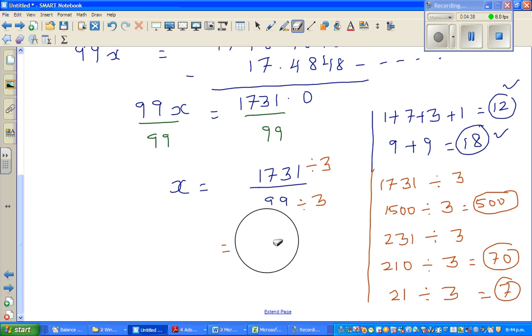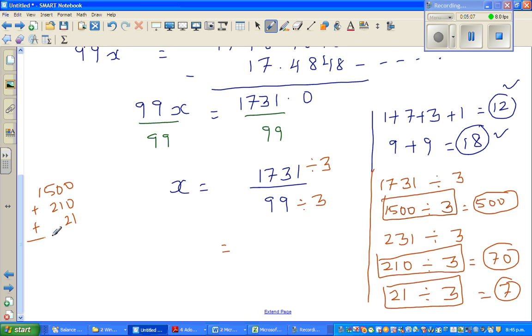577. So this is nothing but 500. So I hope you understood. This is 1500 divided by 3. And then you've got 210 divided by 3. And then you've got 21 divided by 3. So just to explain, so this is 1500 plus 210 plus 21. So it's 1731. So what I've done is I split this into neat numbers by which you can divide. You can also use the long division method, which is 577 over 33.